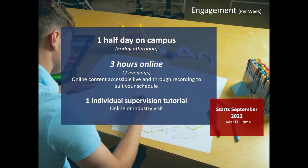This program has been developed to support professionals who wish to up-skill while remaining in full employment. The hybrid delivery combines an afternoon per week on campus with online delivery of three hours per week over two evenings. The online content will also be recorded to allow learners to engage at a time that suits their schedule. You will also receive an online tutorial with your supervisor at a time that suits you. Uniquely, this supervision could take place within your company to benefit from an on-the-ground approach.